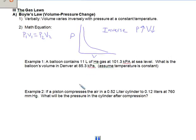Let's try working a couple of equations. The first one here is a balloon contains 11 liters of helium gas at 101.3 kPa. What is the balloon's volume in Denver at 85.3 kPa? And we're going to assume the temperature is constant.